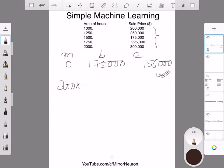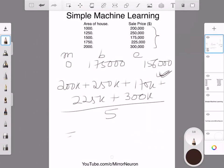So what does that mean? I have 200k plus 250k plus, I'm just repeating the same experiment again with a new assumption, 175k plus 225k plus 300k, whole divided by 5, and that comes around 230,000. Just the average sale price. So if I take this as my new intercept value...